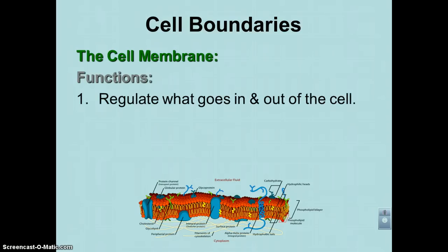They got two functions. Number one, they regulate what comes in and what goes out of the cell. And this is really, really important. It allows nutrients and oxygen to get in, allows waste and whatnot to get out, and it also makes sure that bad stuff doesn't get in and what needs to stay in doesn't get out.